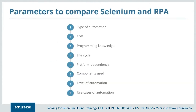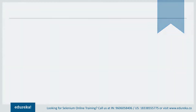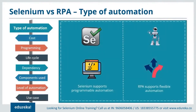Let's look at the parameters taken into consideration for comparing the two automation giants: the type of automation, cost, programming knowledge required, lifecycle, platform dependency, components used, level of automation, and use case. Starting with type of automation: Selenium supports programmable automation, where the sequence of any operation can be changed based on user requirements, whereas RPA supports flexible automation, which is a hybrid of fixed and programmable automation.